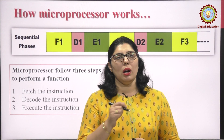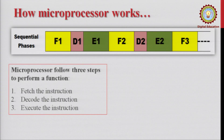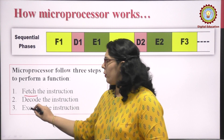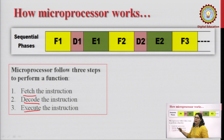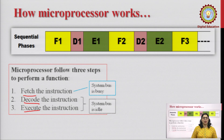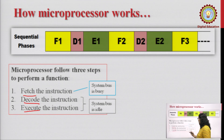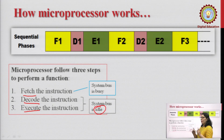A microprocessor has 3 steps to follow: first it fetches the instruction, then decodes it, and then executes it. But during fetching, the system bus is busy, whereas during decode and execution it is idle. That means if we are executing the first instruction, the system bus is not being fully utilized.